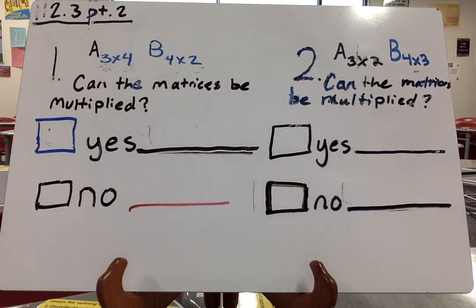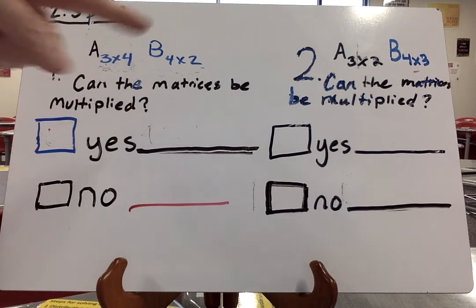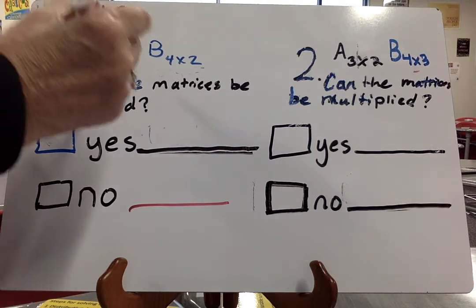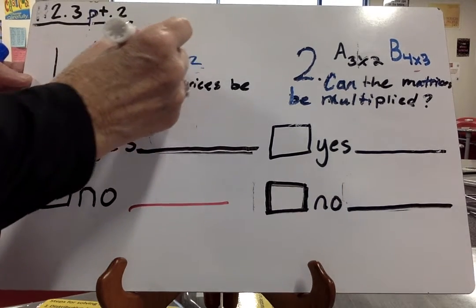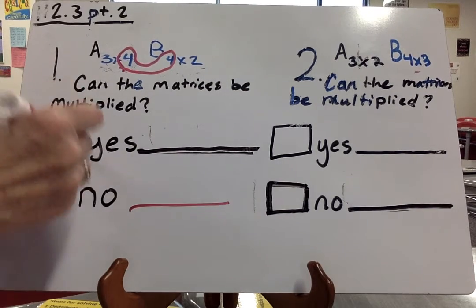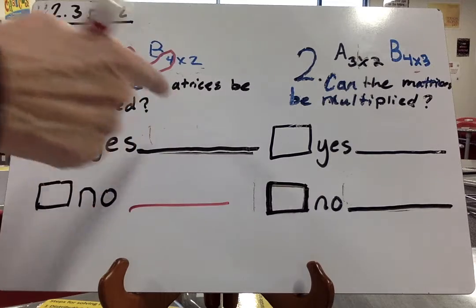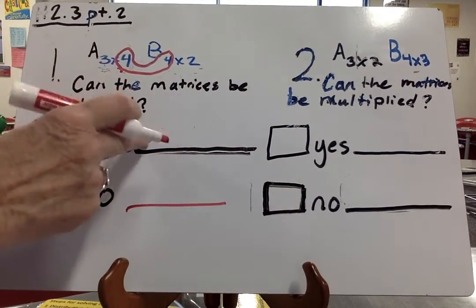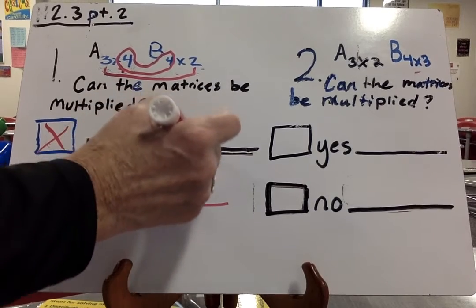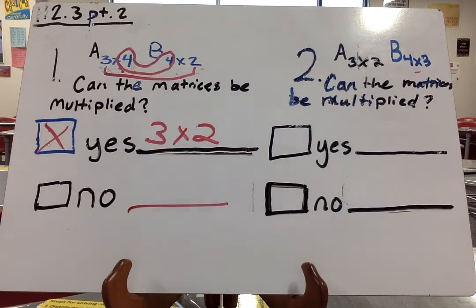So number 1, A is a 3 by 4, and B is a 4 by 2. Can the matrices be multiplied? Well, we need to see, do these two match up? Yep, they're both 4s, so yes. And we want to put our product dimensions right there, it's going to be what's on the outside? 3 by 2.